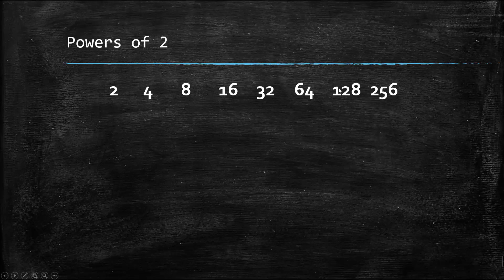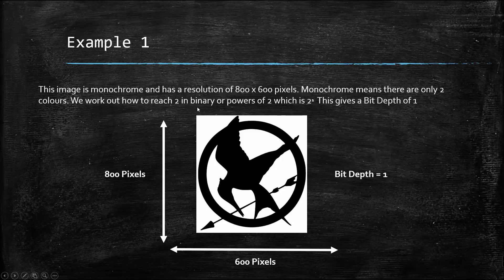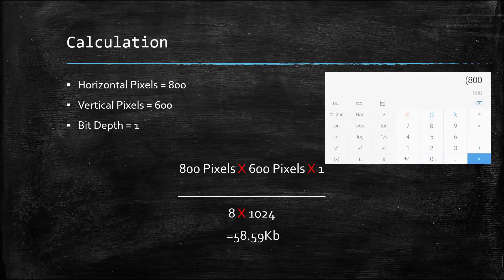Think of each place as a bit depth of one, two, three, four, five, six and so on. For example, if we had eight colors and wanted to know how many bits, we'd use powers of two to get to eight — that's three places, so three bits for eight colors. Going back to our example, we have a bit depth of one. So: 800 pixels times 600 pixels times 1, divided by 8 times 1024, gives us 58.59 kilobytes.